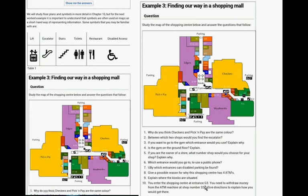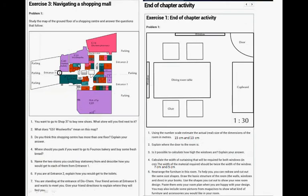You enter the shopping center from G3. Where's G3? So G2, G3. You need to withdraw money from an ATM machine at Shop 32A, which is right there. That says ATM, ATM, ATM. It printed quite small. Give directions to explain how you would get there.